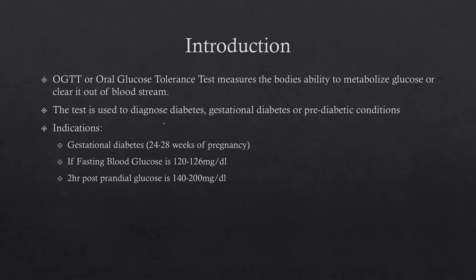The test is used to diagnose diabetes, gestational diabetes, or a pre-diabetic condition. It is usually done when the patient is pregnant and has gestational diabetes between 24 to 28 weeks pregnant. It is also indicated if the patient's fasting blood glucose is between 120 and 126 (pre-diabetic condition), or if the 2-hour post-prandial glucose is between 142 to 200 mg per deciliter.